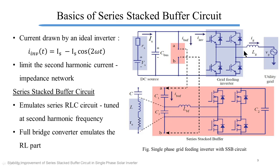Then we have our single phase inverter connected to the utility grid through filter inductor LG. The ideal current drawn by the inverter is given by I_inverter(t) = IS minus IS·cos(2ωt). We must limit the second harmonic current entering the PV array. Hence we are adding this impedance network which is our SSB circuit. The SSB circuit emulates a series RLC circuit tuned at second harmonic frequency. The series blocking capacitor C1 becomes the C of the RLC circuit. The L and R parts are emulated by the full bridge converter. The full bridge converter must emulate the series resistance RE to account for power losses due to switching and conduction of the power semiconductor devices. Hence the value of RE is an indication of power loss in the full bridge converter of the SSB circuit.